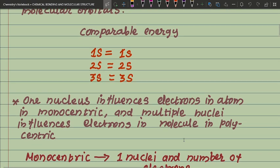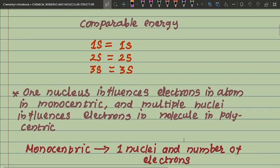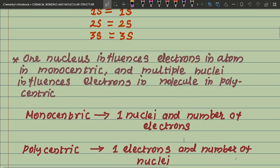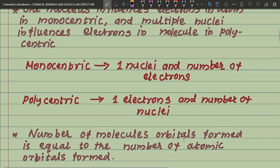In an atom, one nucleus influences electrons — this is monocentric. In a molecule, multiple nuclei influence electrons — this is polycentric. Monocentric means one nucleus with a number of electrons; polycentric means one set of electrons influenced by a number of nuclei.